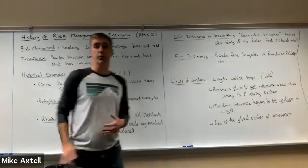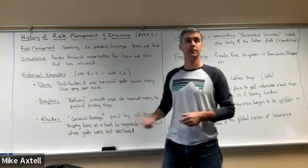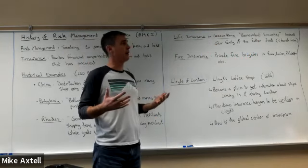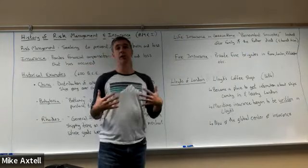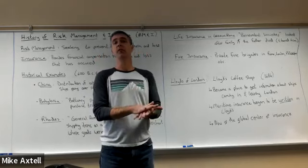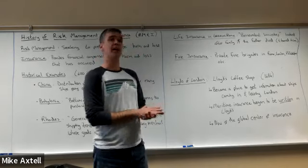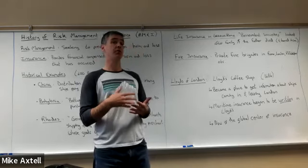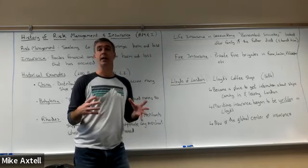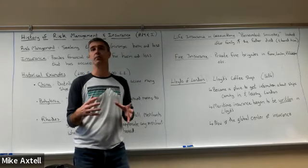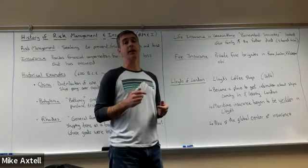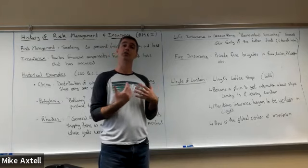All of these forms are essentially shipping and property risk management. There were also early ideas of life insurance. Ancient Greece and Rome had benevolent societies that would look after members — if you were a member and you died, the society would step in and help take care of your family and pay to bury you. These benevolent societies gradually evolved into the medieval guilds that dominated European commercial enterprises for several centuries, and those guilds then evolved into professional bodies like the Society of Actuaries, which regulates entry into the actuarial profession.